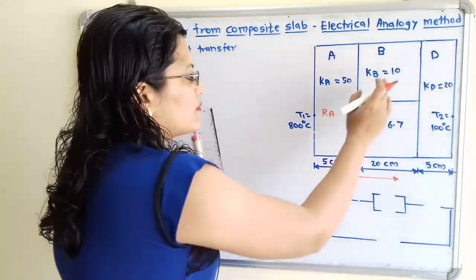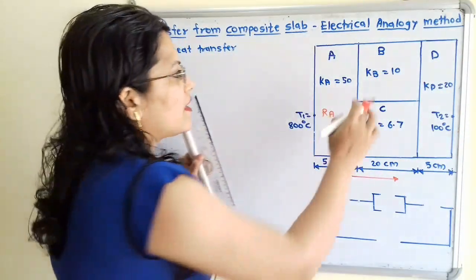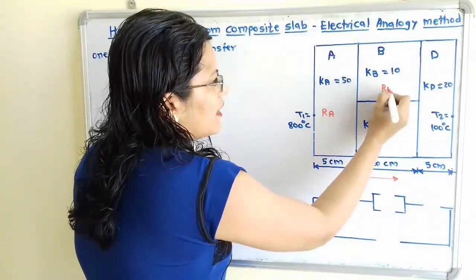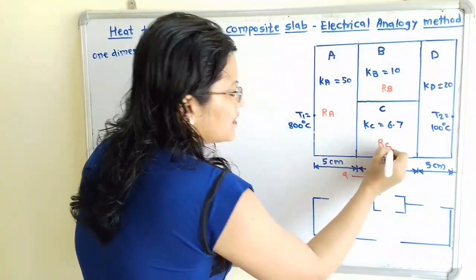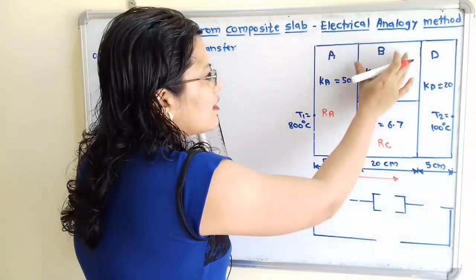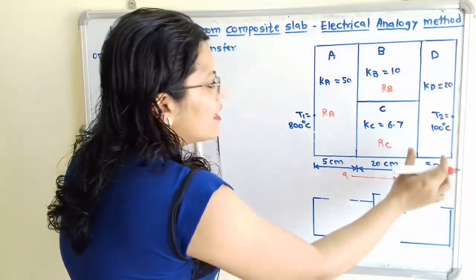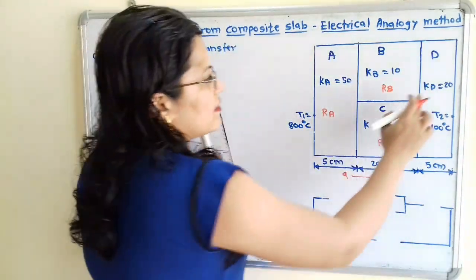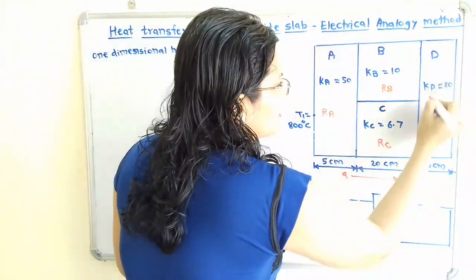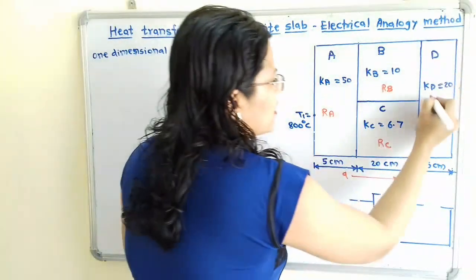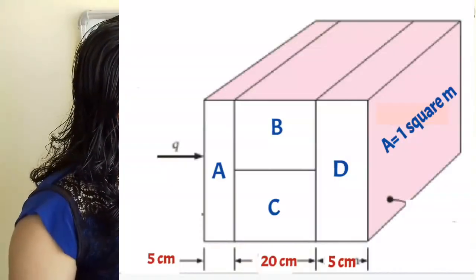From materials B and C, the heat is conducted onwards. The resistance for material B is RB and the resistance for material C is RC. The heat conducted from materials B and C goes towards material D, which has the same thickness of 5 centimeters and conductivity KD equal to 20 Watt per meter Kelvin. The resistance to heat transfer through material D is RD, and here is the final temperature T2.